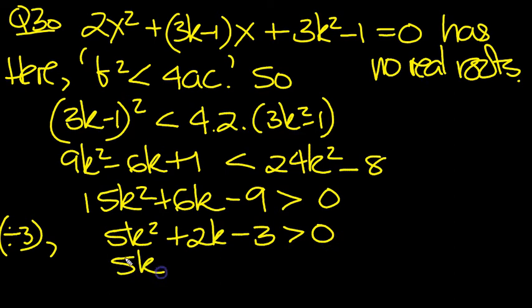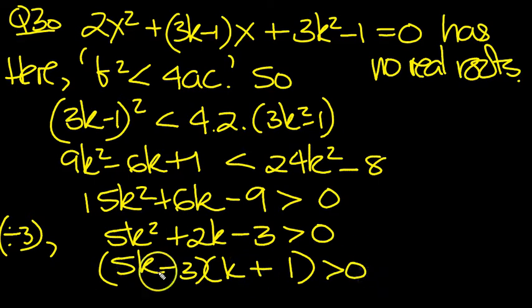Now we factorize. It has to be 3 and 1 for the constants. We need a plus and a minus to get the middle term. So we get 5k² + 5k - 3k is the 2k, and the last term, plus times minus is -3.